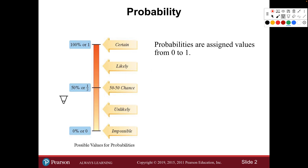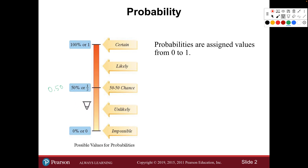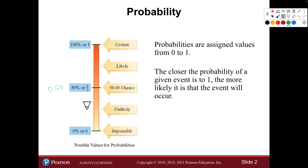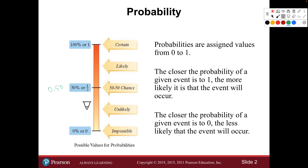Fifty percent is also written as the decimal 0.5, or one-half — all these in-betweens exist. The closer the probability of an event is to one or 100 percent, the more likely it is; the closer to zero, the less likely. There's also subjective probability — what you think is going to happen, that gut feeling.